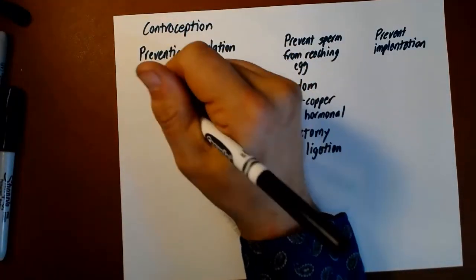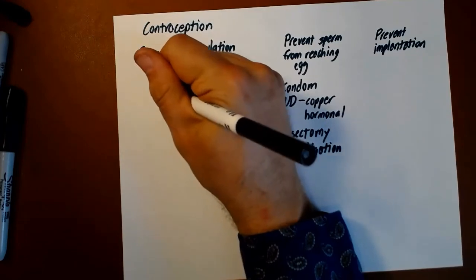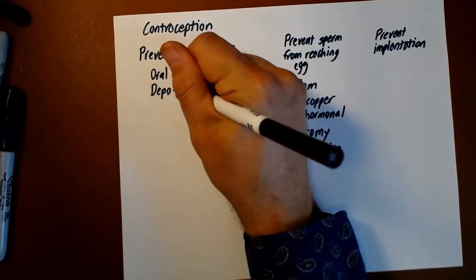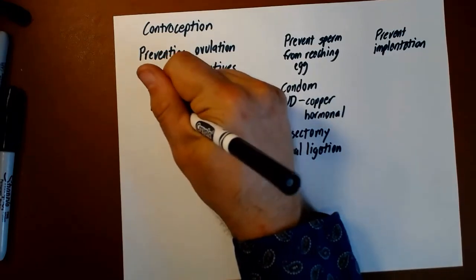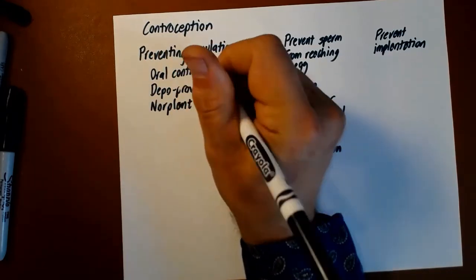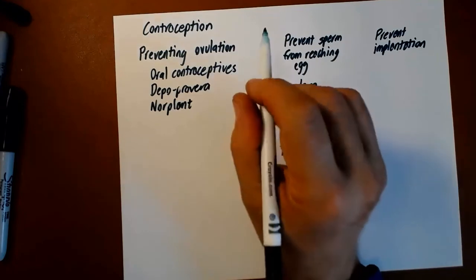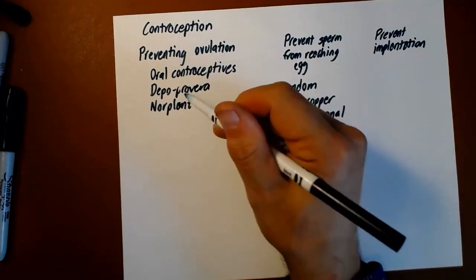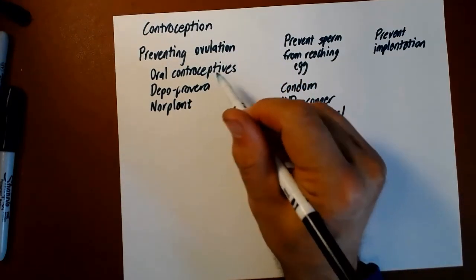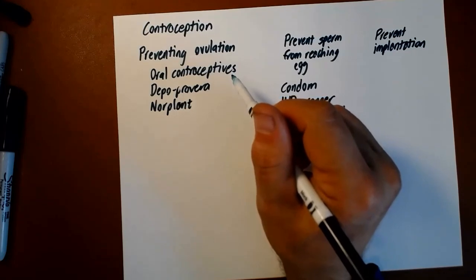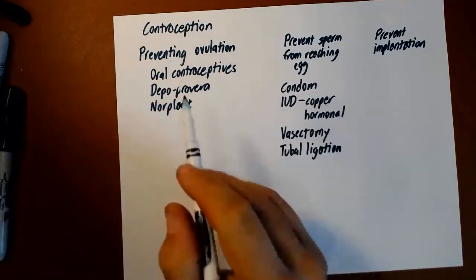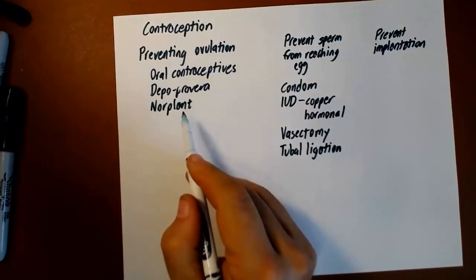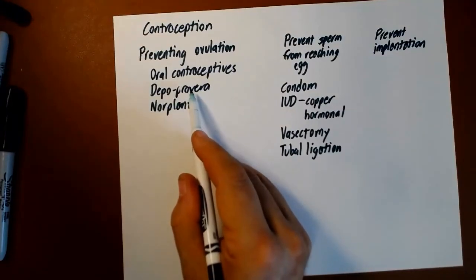There are some similar methods, Depo-Provera, which is injectable, and Norplant, which is a set of rods implanted under the skin that slowly release progesterone. These also work very well and they have the advantage of not requiring as much careful attention to routine as oral contraceptives. So many people are very happy with these implanted or injectable hormonal methods.